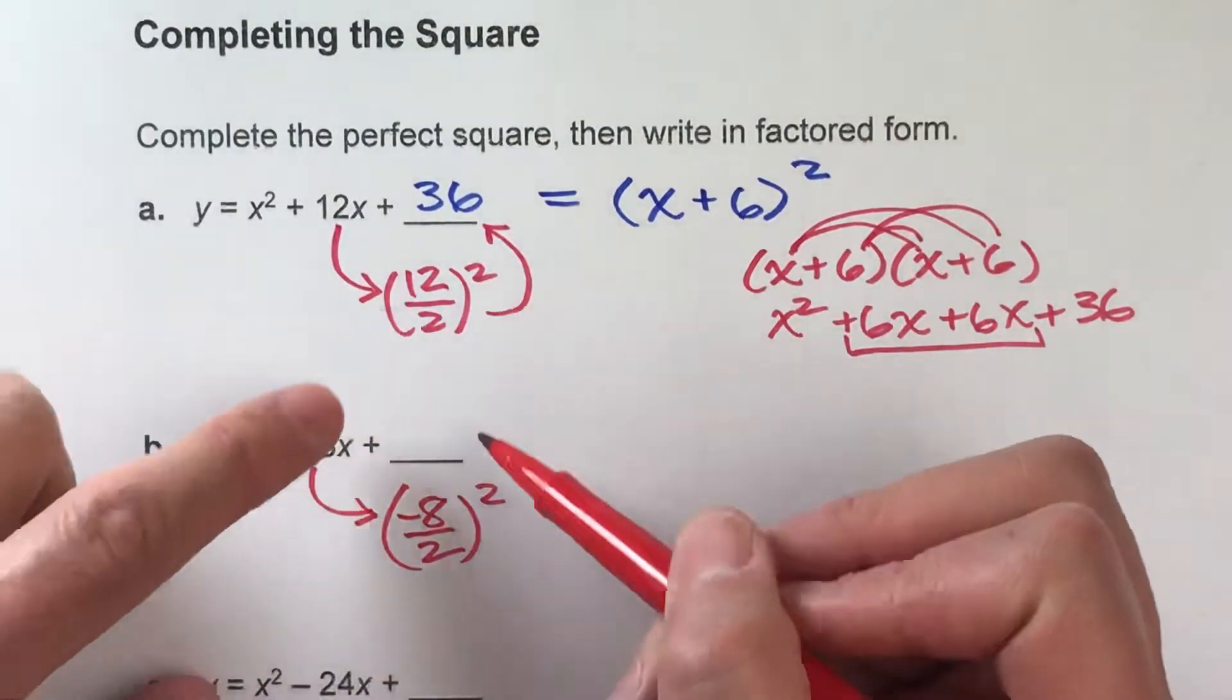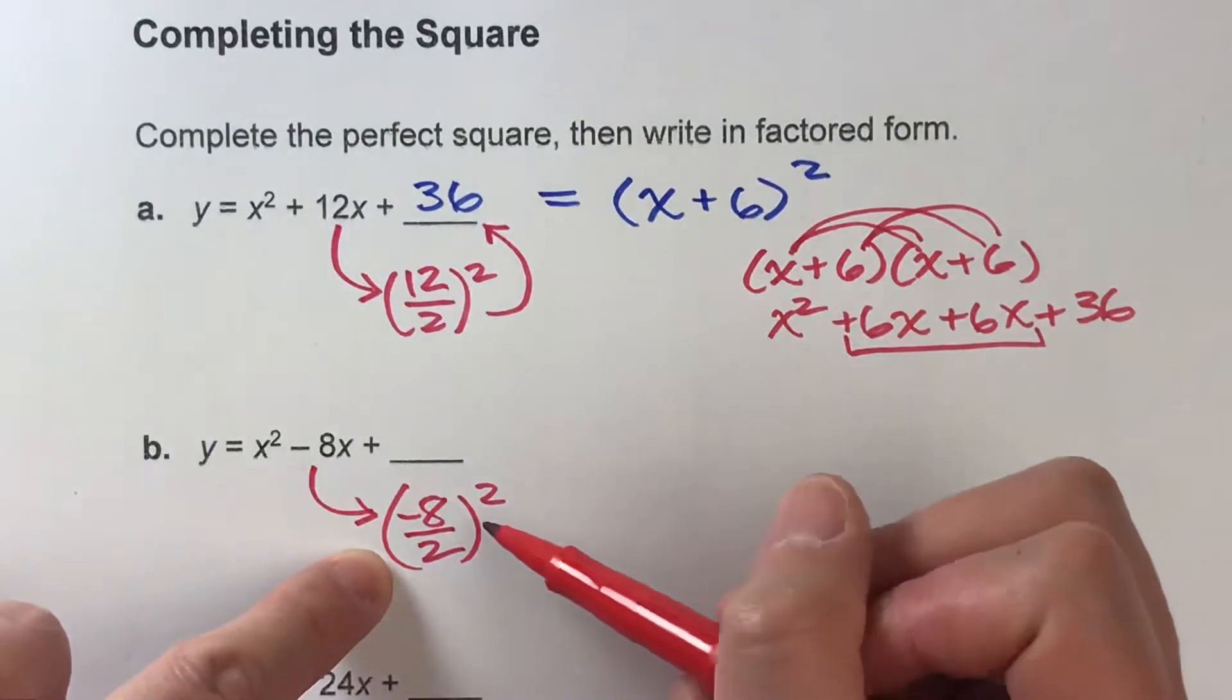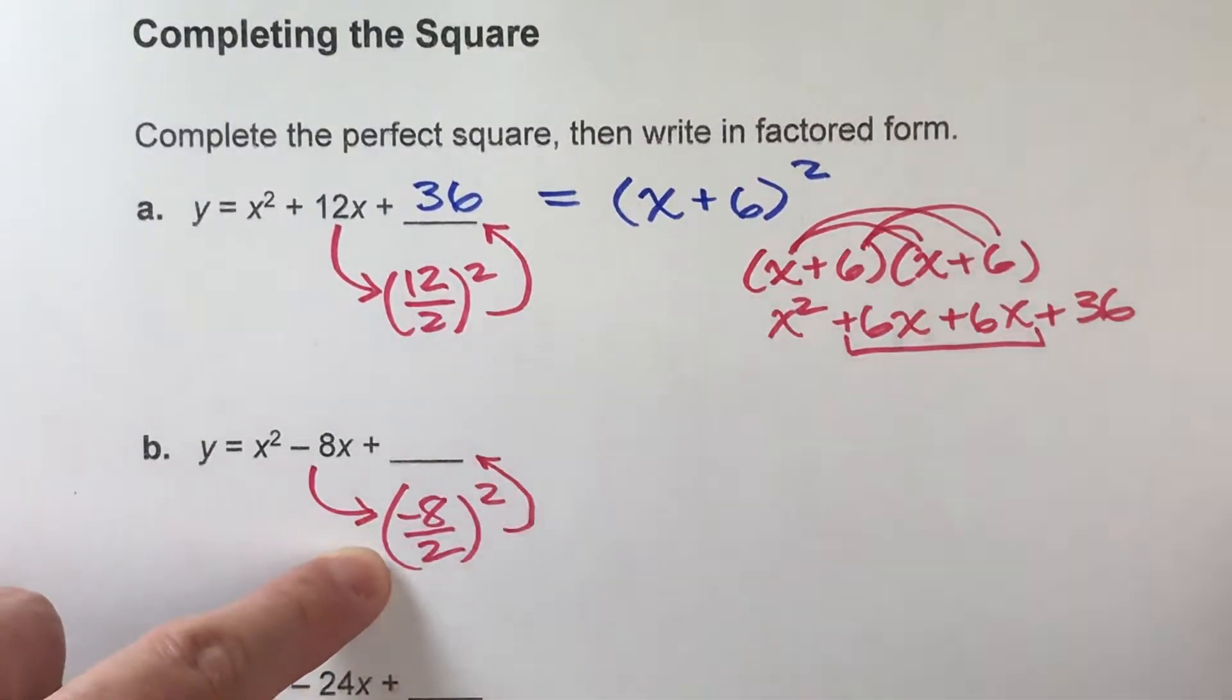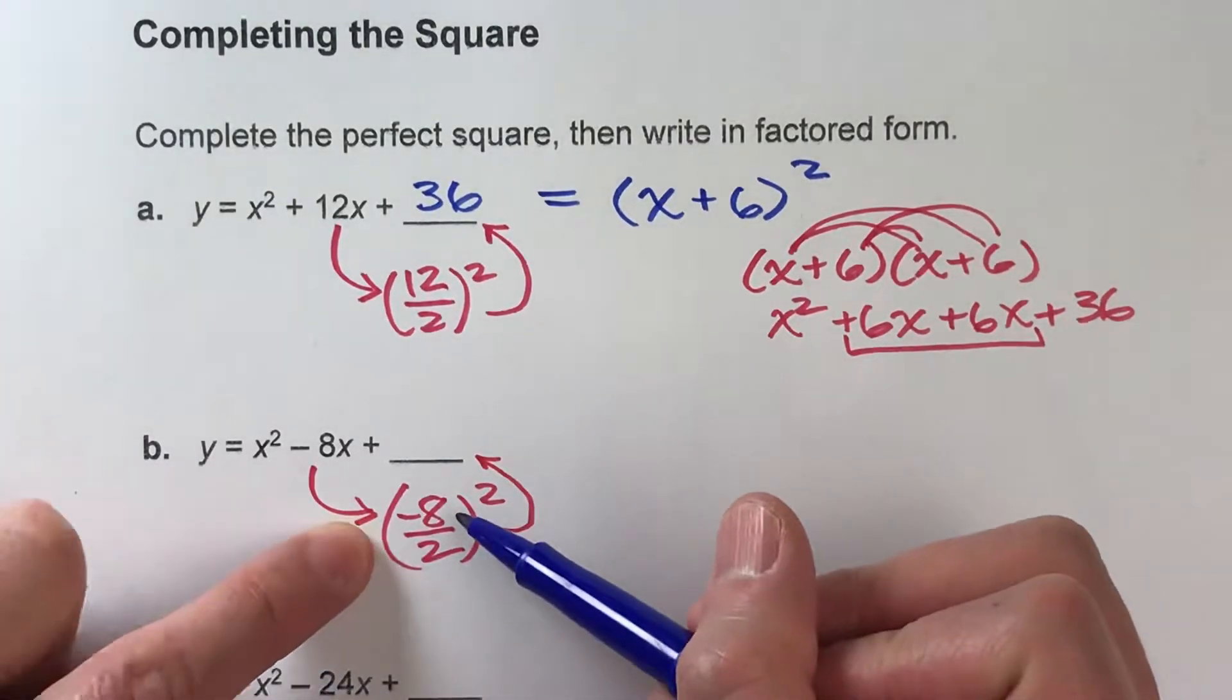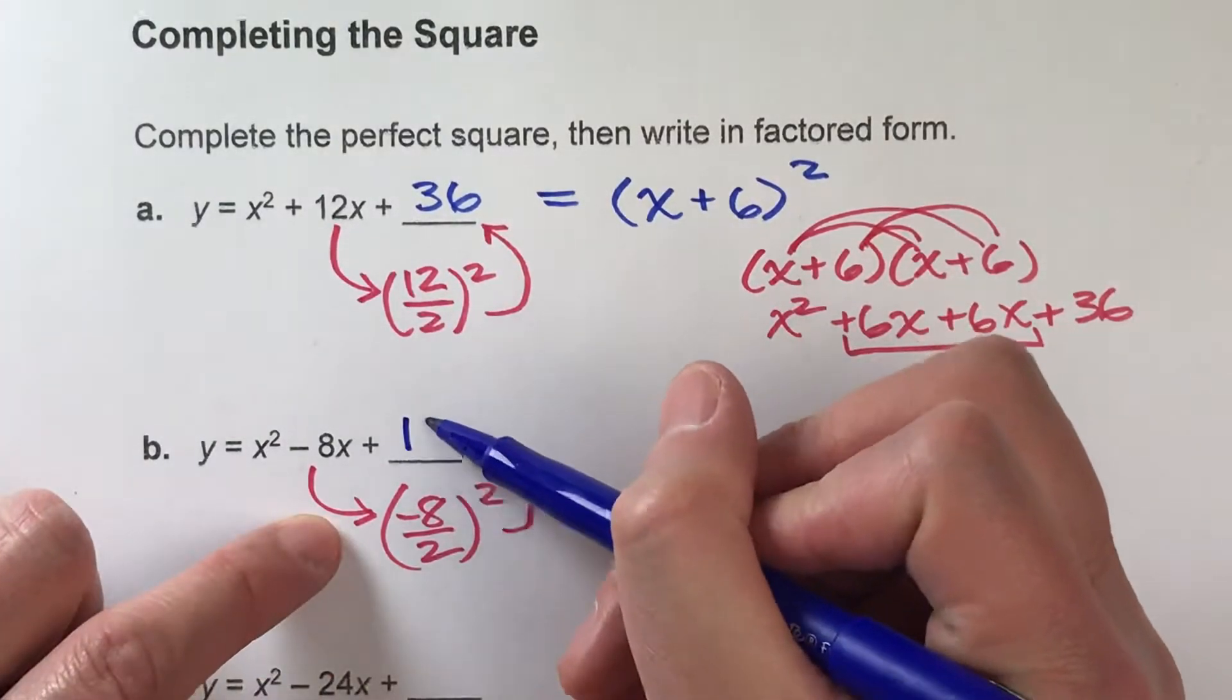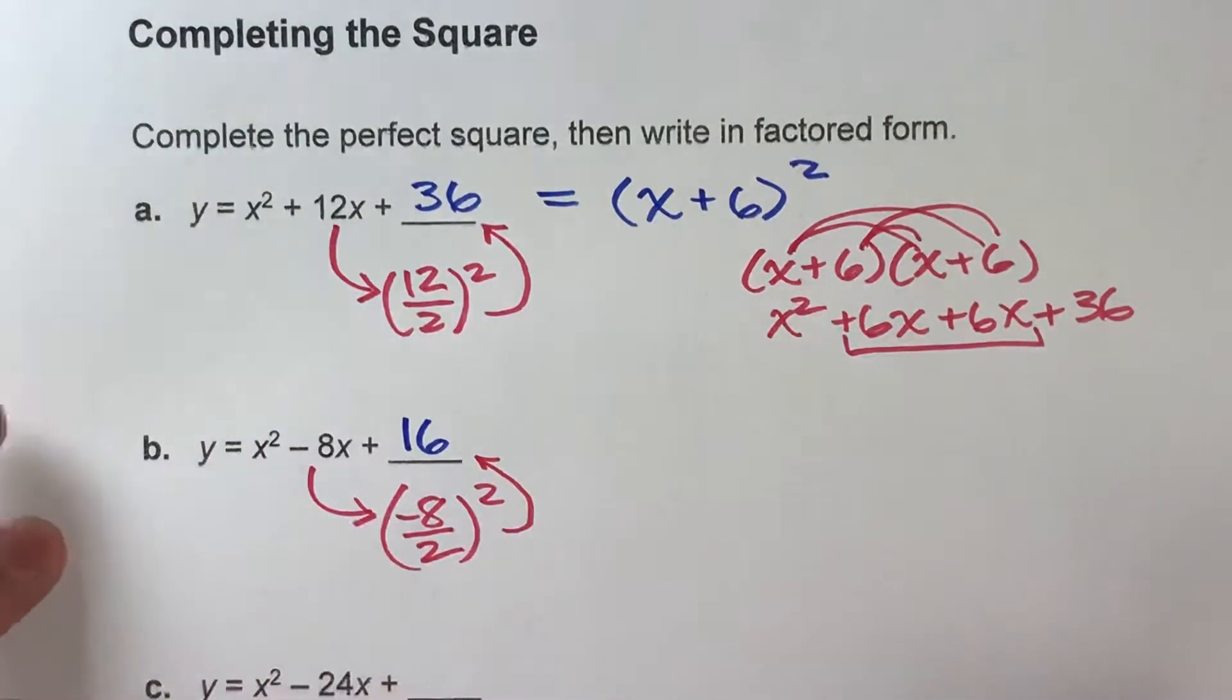And notice, because we square it, it doesn't matter if it's positive or negative, it's always going to come out positive. Okay, so that's going to get us our third term. Negative 8 divided by 2 is negative 4. Negative 4 squared is positive 16. So that's a plus 16 there.